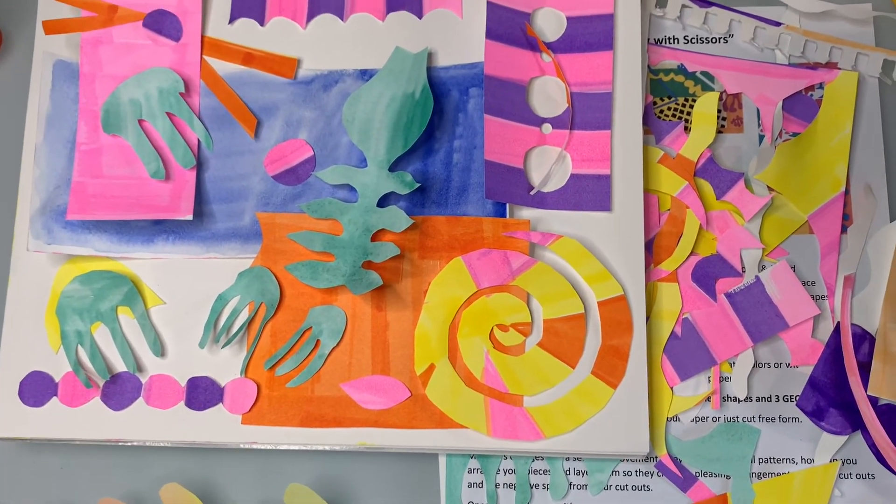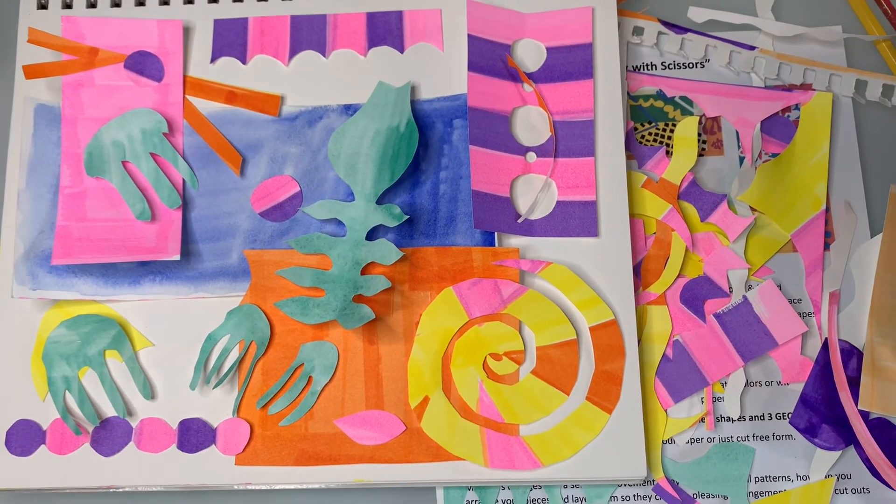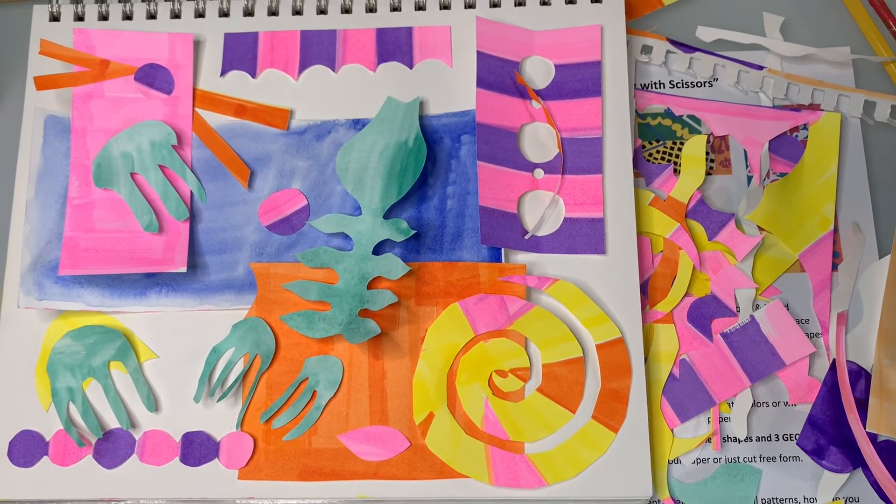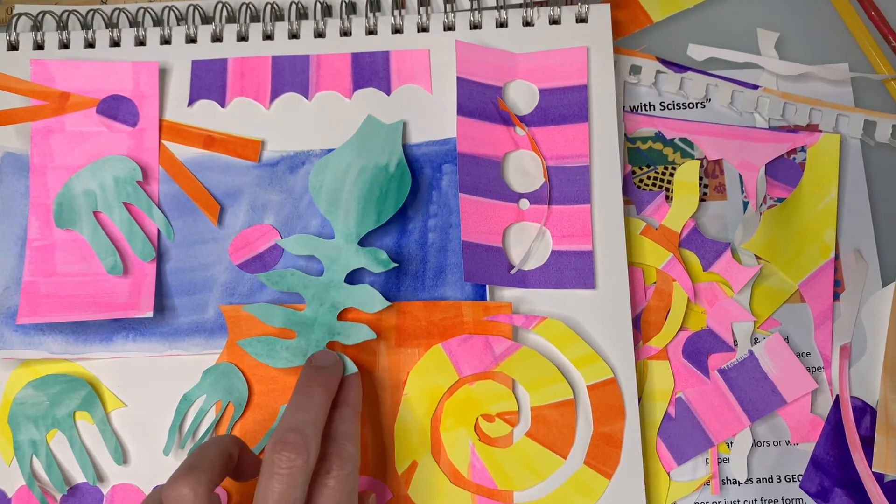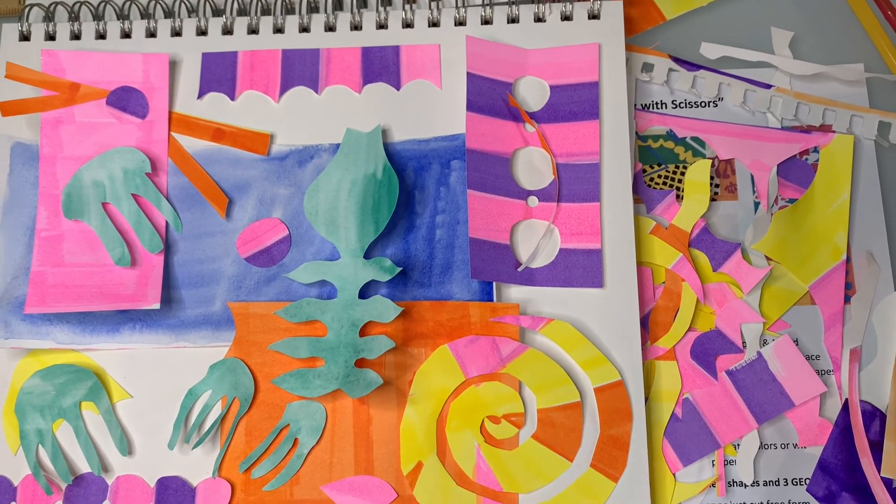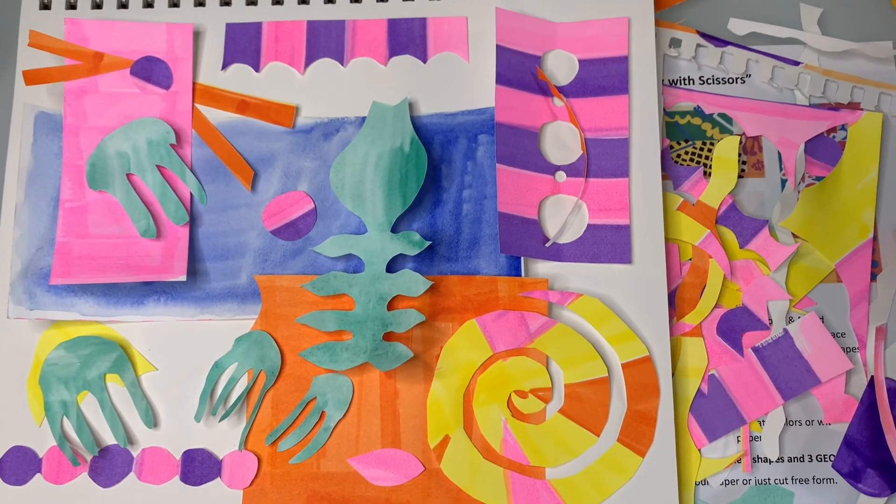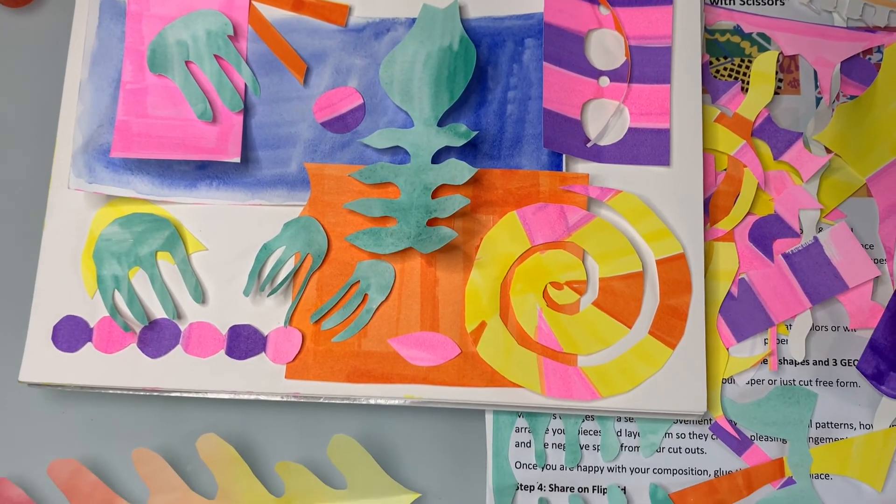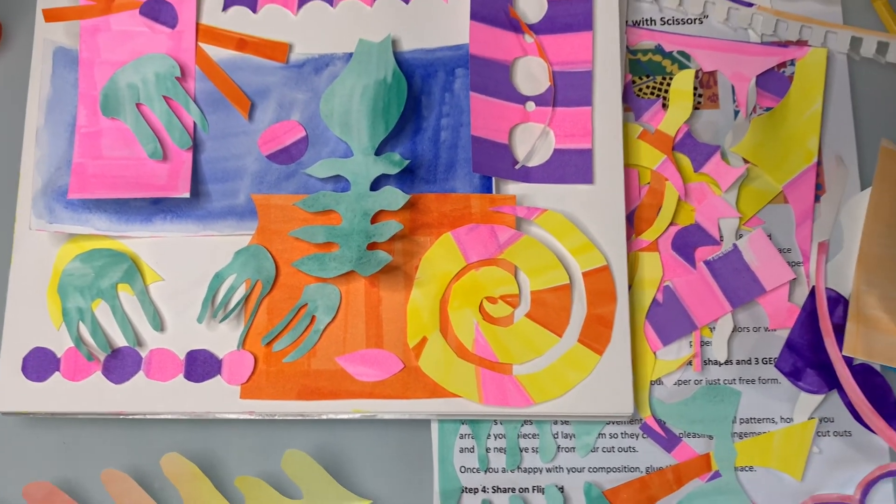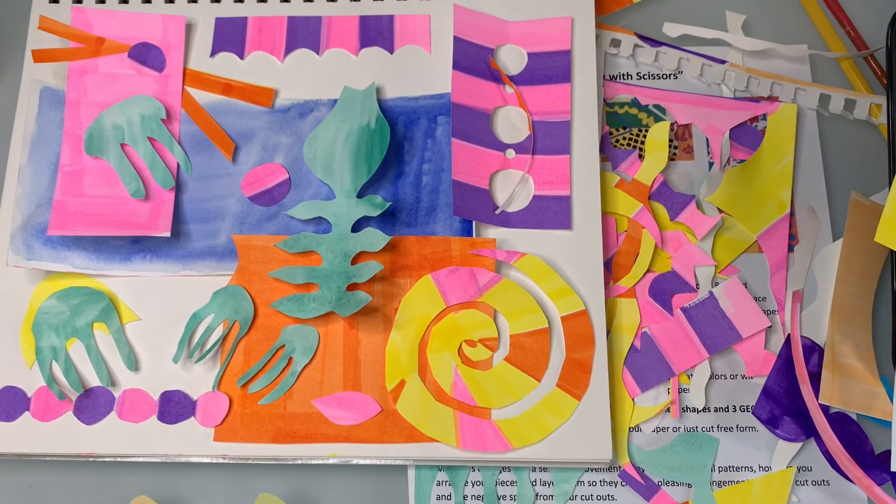You can add pattern—my stripes here help with the pattern element. Work towards, once you figure out your first arrangement, see if adding or taking away helps, and then glue it and send it to me on Flipgrid. I can't wait! I had lots of fun doing this. I hope you do too.